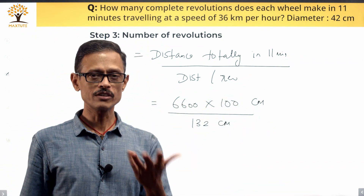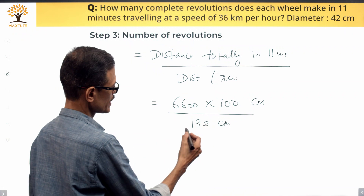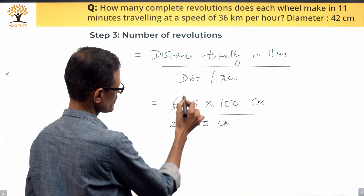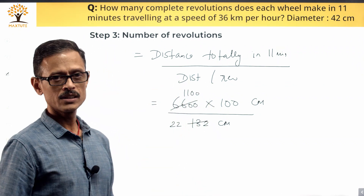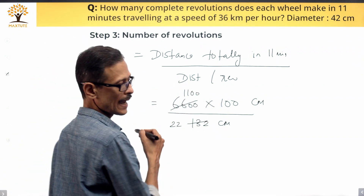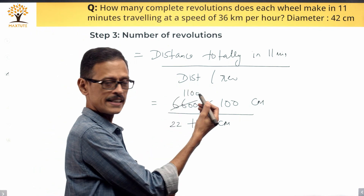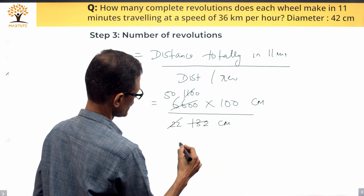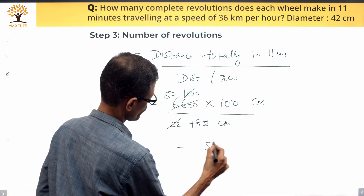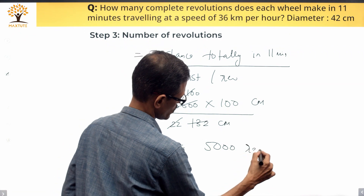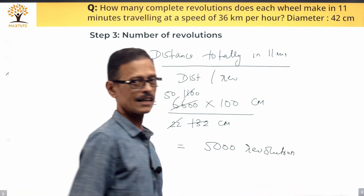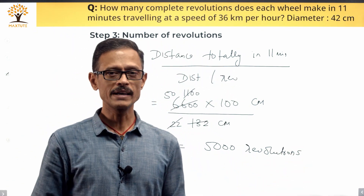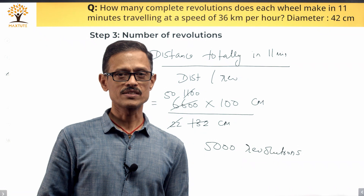132 is 22 times 6, so 6 cancels to leave 22, and 6,600 times 100 divided by 22 simplifies: 22 times 50 equals 1,100, so this becomes 50. Then 50 times 100 gives 5,000 revolutions. Each wheel makes 5,000 complete revolutions in 11 minutes.